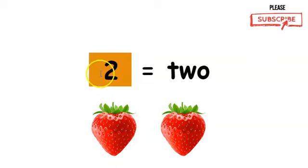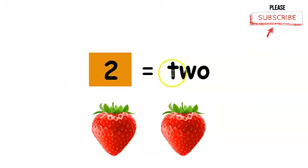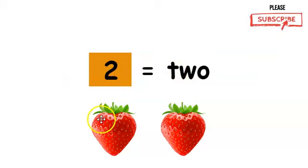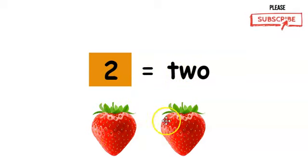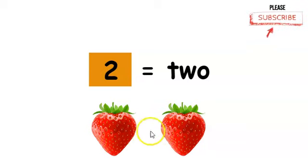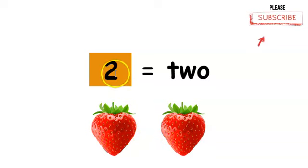This is the number two and this is how you write two. How many strawberries do we have? Let's count. One, two. There are two strawberries. Two.